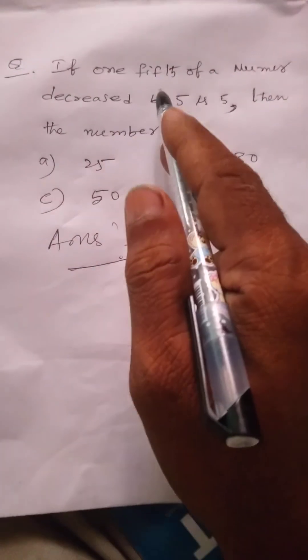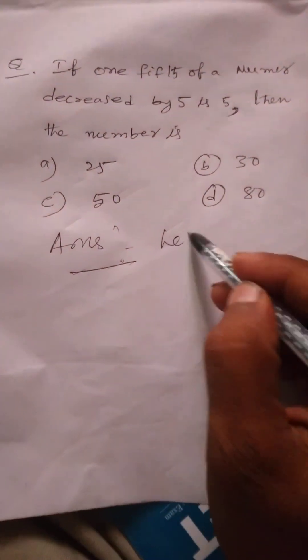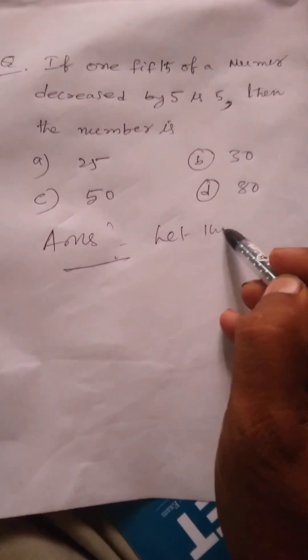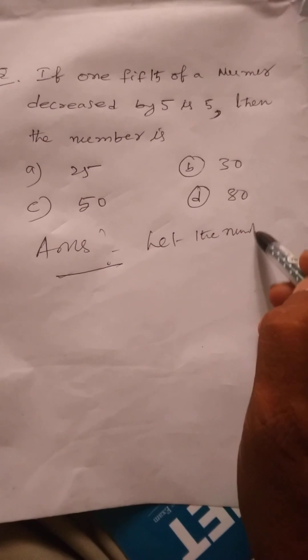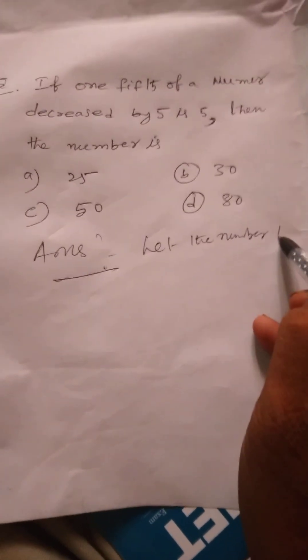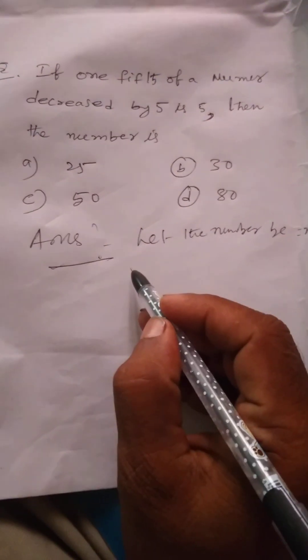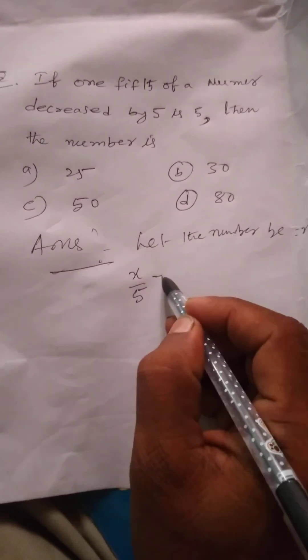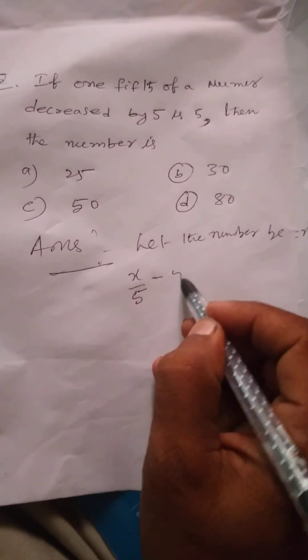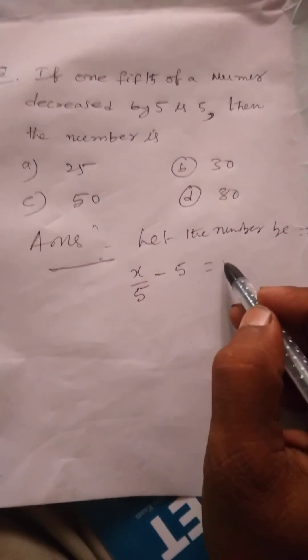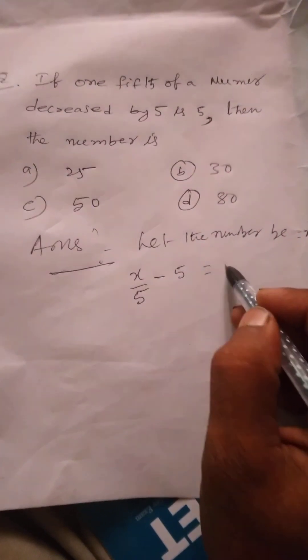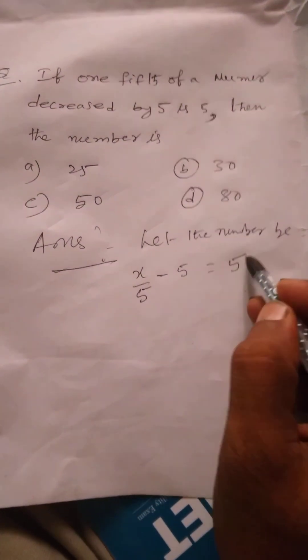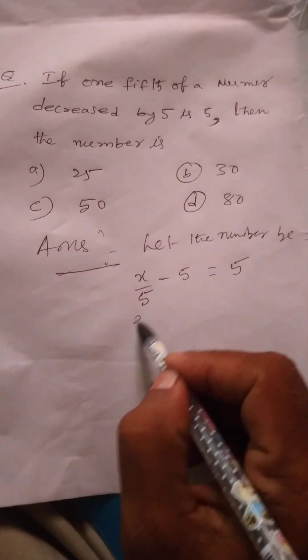Let the number be X. So, one-fifth of a number: X divided by 5. According to the problem, X by 5 minus 5 equals 5.